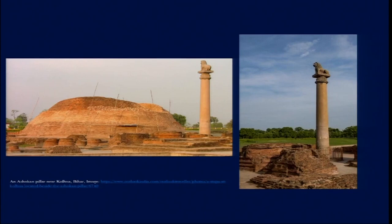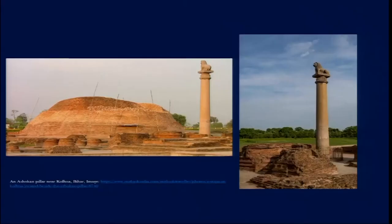In some cases, the pillars and edicts were installed at major crossroads or places important to people in those neighborhoods. In other cases, pillars also marked a particular sacred territory. For example, there is an Ashokan pillar from Kolua near Vaishali in Bihar, where we find a stupa — the hemispherical structure where relics of Buddha or a symbolic relic can be kept.